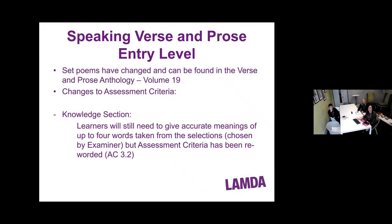A quick recap on Entry Level: the assessment criteria tables have been reformatted, requiring a reword of assessment criteria 3.2. Learners still need to give accurate meanings of up to four words. For distinction, they define all four words; merit is three out of four; pass is two out of four. As long as they accurately define two out of four words, they've met the pass standard. That's all that's changed at Entry Level.